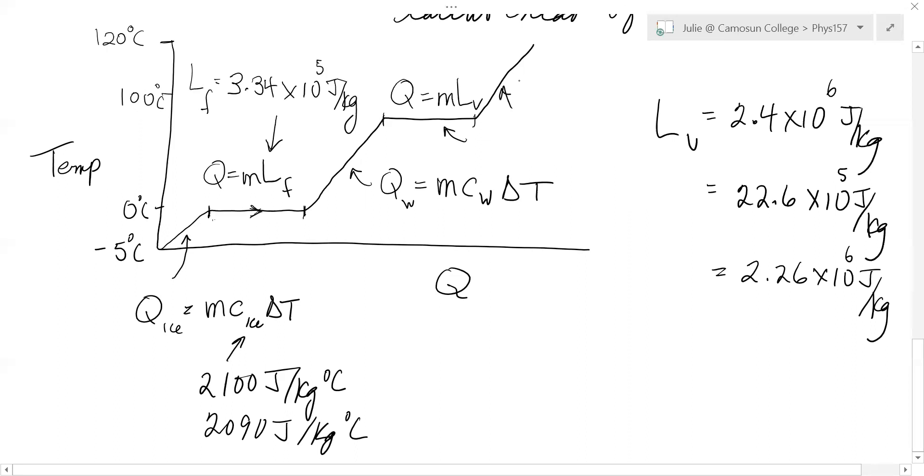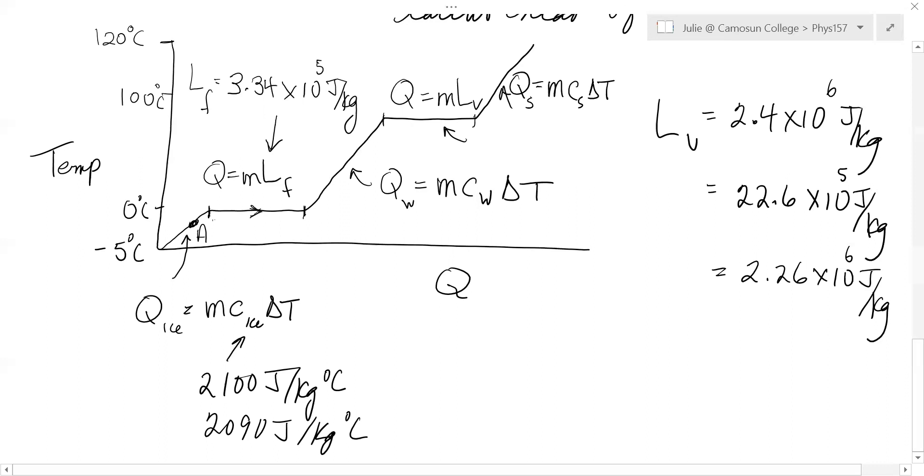This part, this would be steam. This would be Q for the steam would be MC steam delta T. You can't heat up steam unless you catch it and pressurize it. I don't think you have any problems where you're having steam heated up. The thing is, you can't jump around on this curve. If you start down here at point A, you must go warm it up, melt it, warm the water, boil it, warm the steam. You can't just jump from ice to steam. You have to go along the curve.